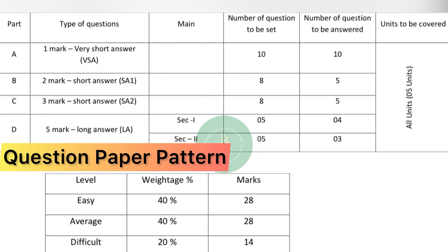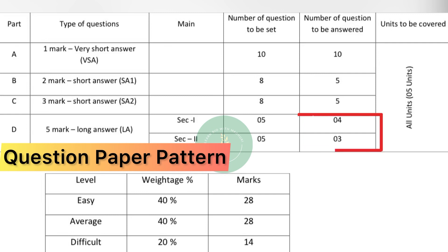The number of questions to be set: Part A will have 10 questions, Part B will have 8 questions, Part C will have 8 questions, and Part D — Section 1 will have 5 questions and Section 2 will have 5 questions. The number of questions to be answered: from Part A, all 10 questions of 1 mark must be answered. From Part B, 8 questions will be asked but you have to answer only 5. From Part C, 8 questions will be given but you have to answer only 5. From Part D Section 1, you have to answer any 4 out of 5. From Part D Section 2, 5 questions will be given but you have to answer any 3.